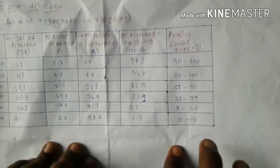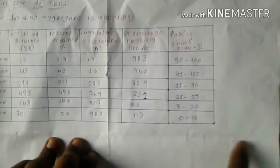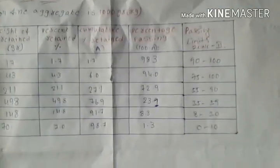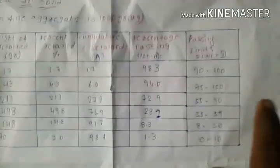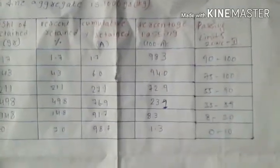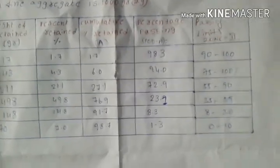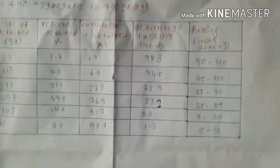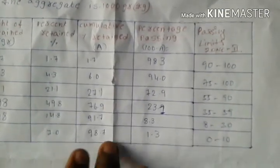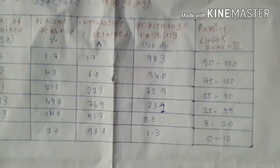Now check the passing limits against Zone A. Zone A check — verify that the values fall within the required zone limits.